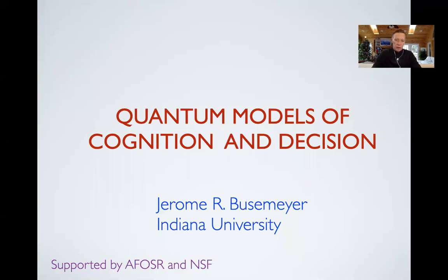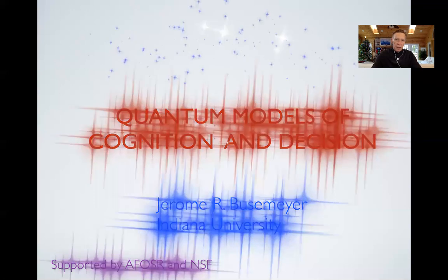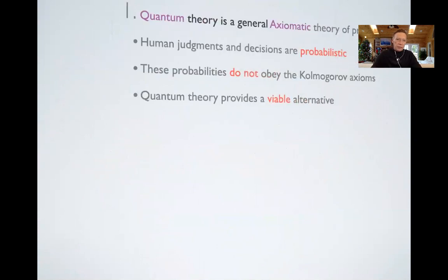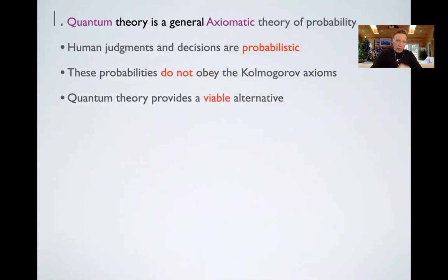So, quantum models of cognition and decision. Why do we want to use quantum theory to begin with? Well, quantum theory turns out to be a general axiomatic theory of probability. It's just as equally general as the traditional probability theory that we work with — sometimes we call it classical or Kolmogorov probability. In fact, some people argue that quantum probability is even more general; it's like a generalization of classical probability.